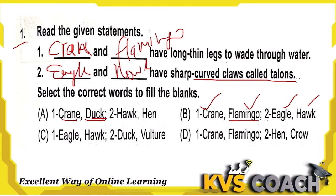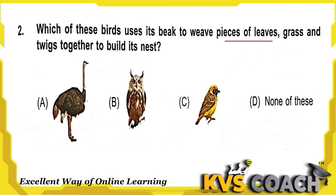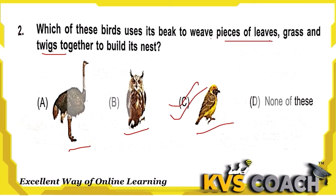Next question: which of these birds uses its beak to weave pieces of leaves, grass, and twigs together to build its nest? This is the weaver bird — it weaves leaves, grass, and twigs together to build the nest. Option C is the right answer.